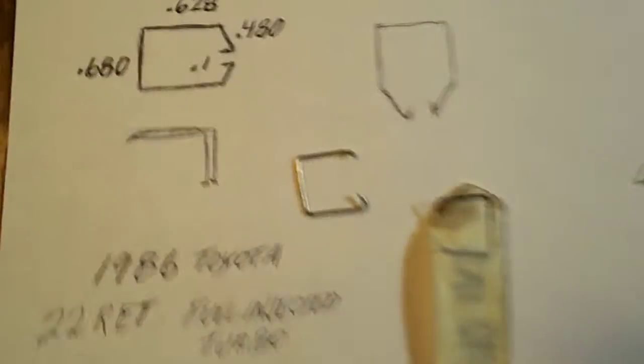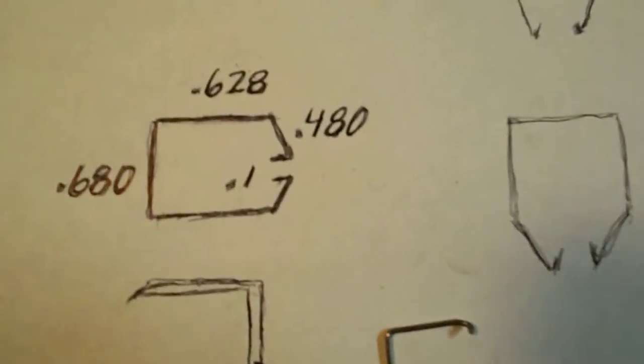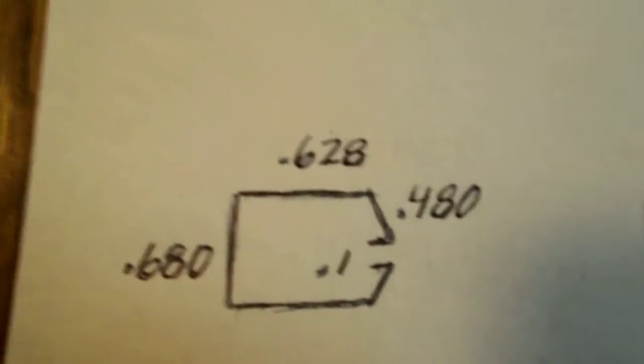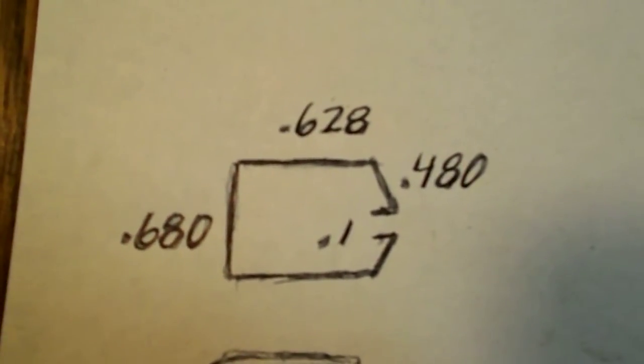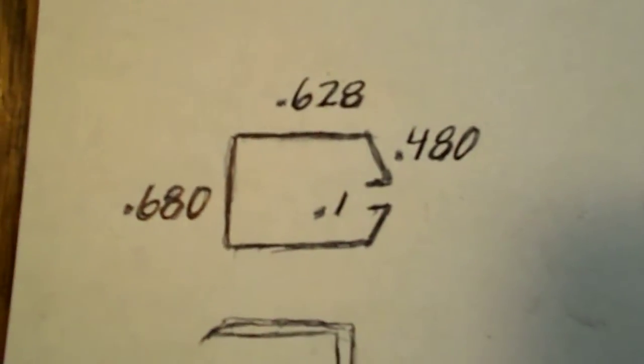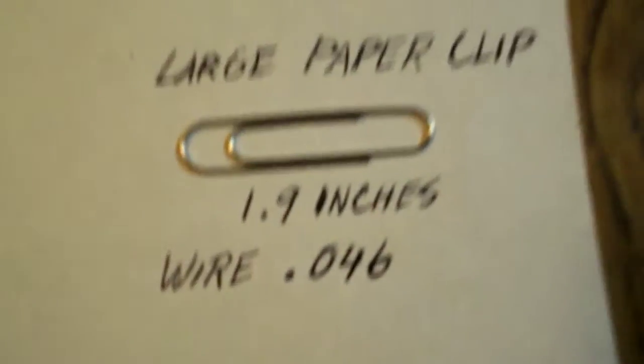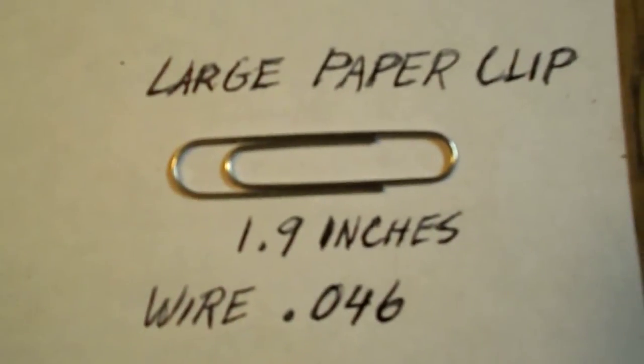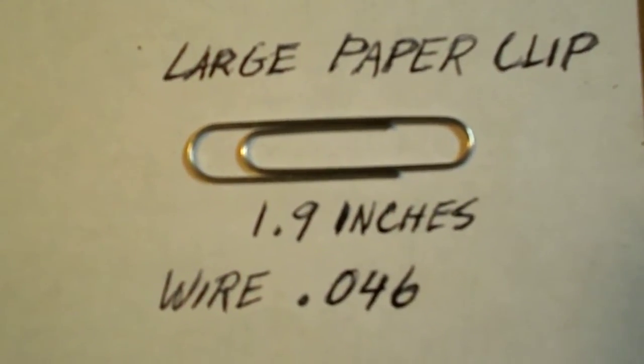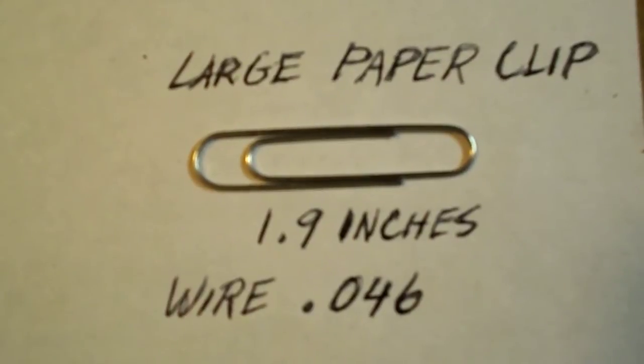So basically here's the dimensions for these bends that I made. This is again, it's just a large paper clip. I'm not sure if it's a number three or what, but it's about 1.9 inches of wire diameter 0.046. If you can get spring steel wire, that might be better yet.